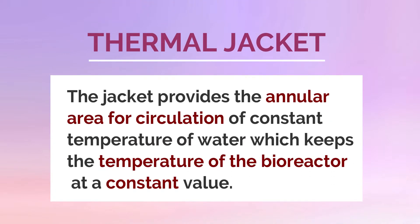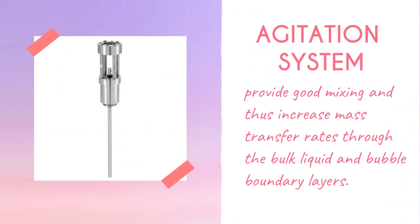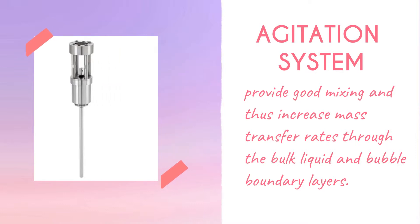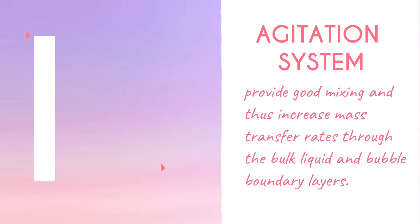Thermal Jacket: The jacket provides the annular area for circulation of constant temperature water, which keeps the temperature of the bioreactor at a constant value. Agitation System: Provides good mixing and thus increases mass transfer rates through the bulk liquid and bubble boundary layers.